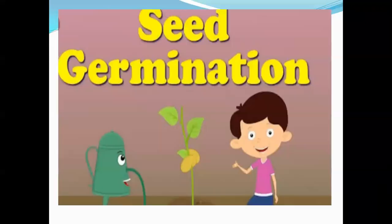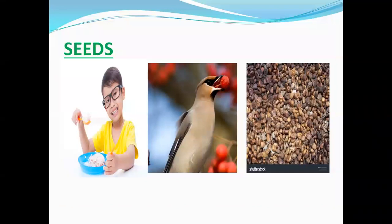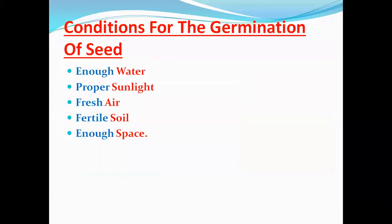Today we are going to learn about seed germination. A single plant produces many seeds but all of them do not have a chance to grow or survive. Some of them are eaten by us, like rice seed, wheat seed, gram seed, etc. Some of them are eaten by birds and other animals, while some may not get the right conditions to germinate, so they dry up and die. Only a few seeds succeed to germinate and produce new plants like the parent plants.